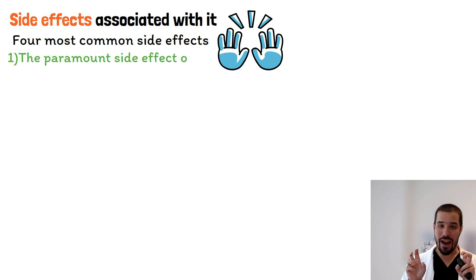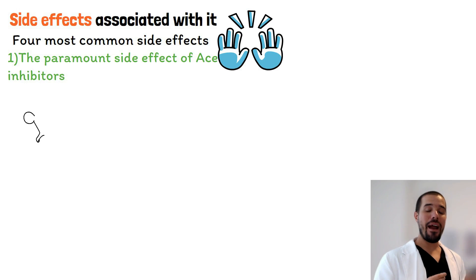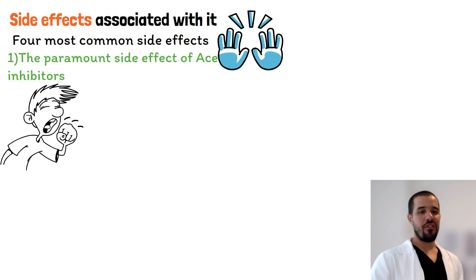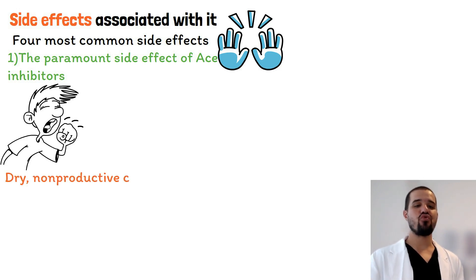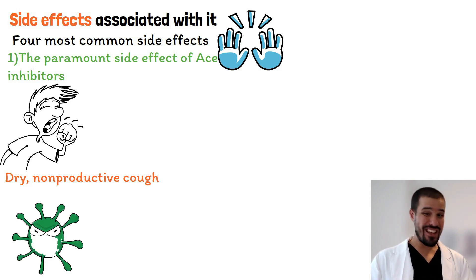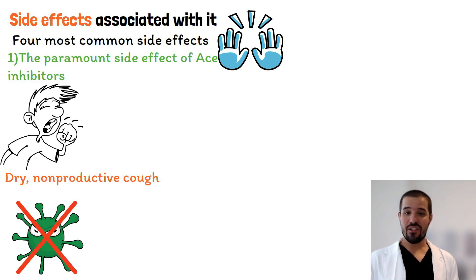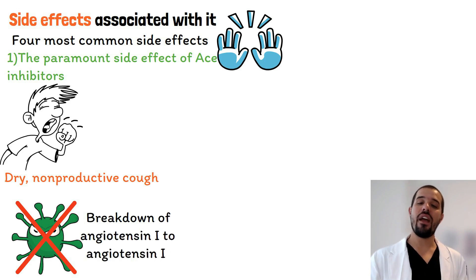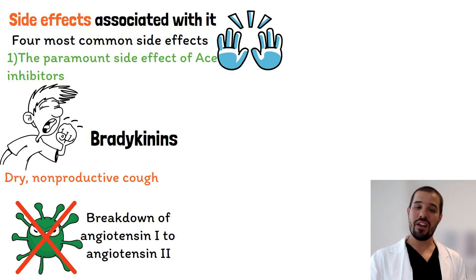The first side effect is what I like to label as the paramount sign and symptom of ACE inhibitors: the dry non-productive cough. Individuals on ACE inhibitors have the potential to develop a dry non-productive cough. This is a dry cough that is non-infectious, not correlated to a bacterial or viral process — it is solely related to the breakdown of angiotensin I to angiotensin II, causing an accumulation of bradykinins.